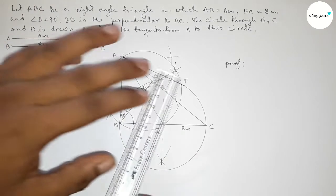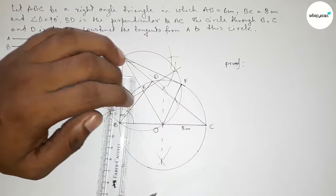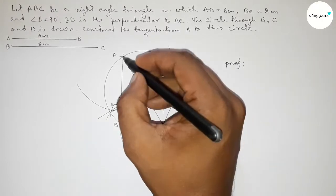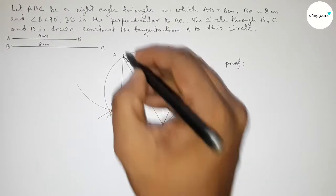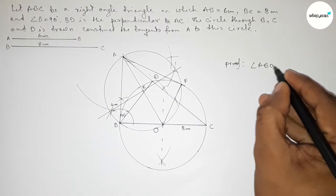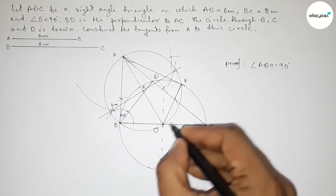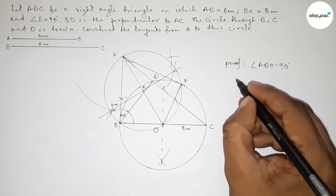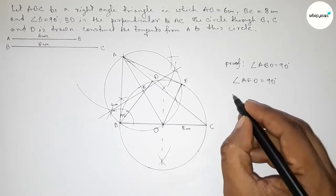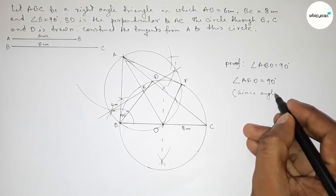Now let's prove this. First, joining O and F. Taking angle ABO: angle ABO equals 90 degrees, since the angle is in a semicircle. Similarly, angle AFO equals 90 degrees, since both these angles are angles in a semicircle.